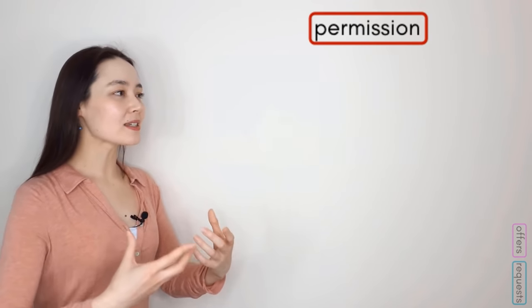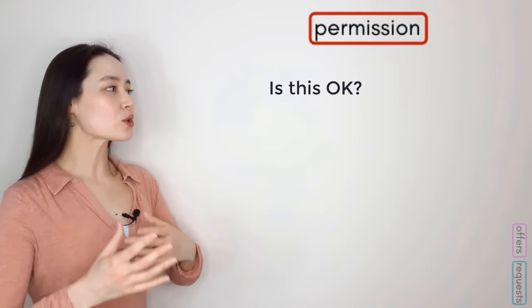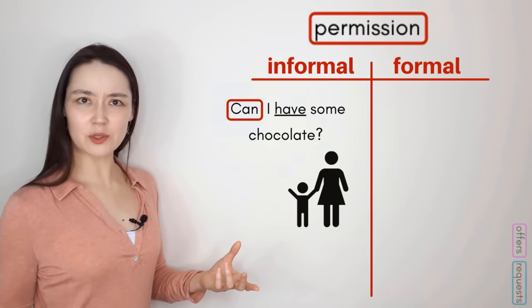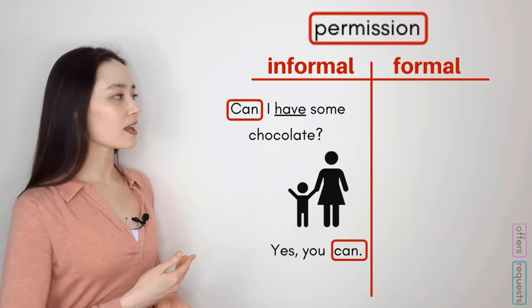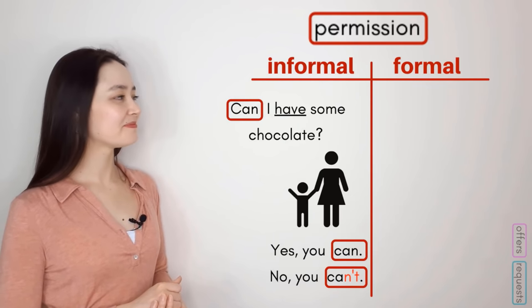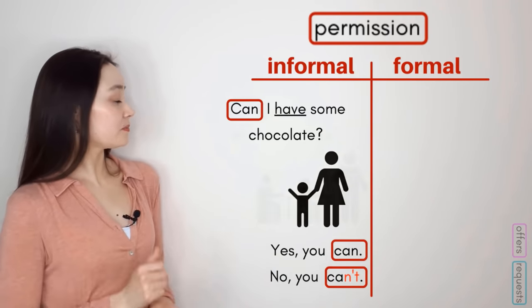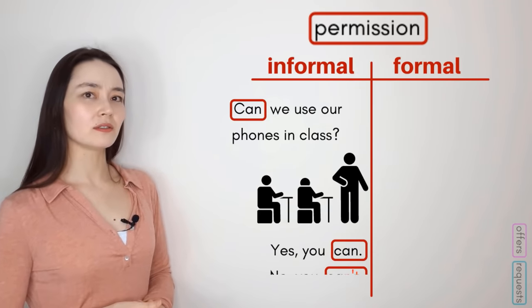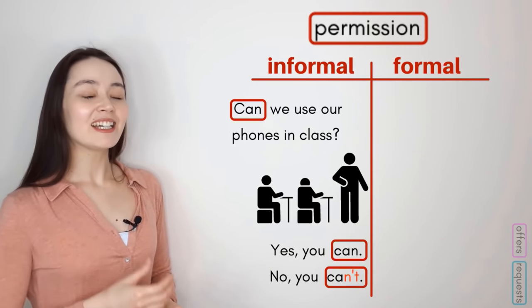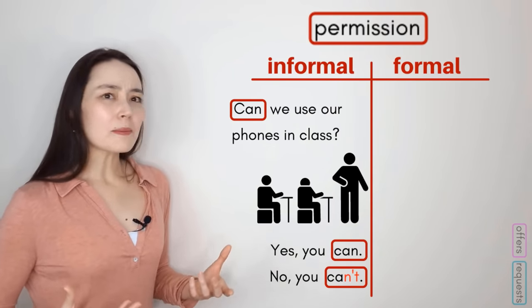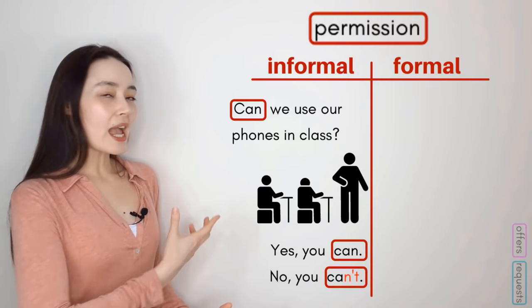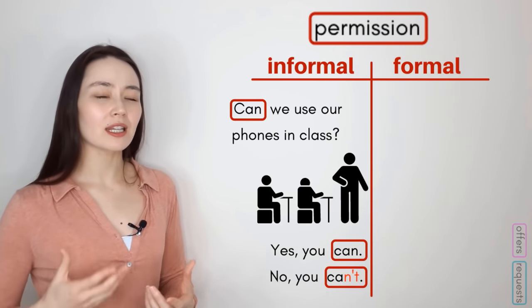Let's move on to permission. Permission means you're asking someone if something is okay in terms of rules and laws. Child to mom: 'Can I have some chocolate?' 'Yes, you can.' 'No, you can't.' Like possibility, 'can' is stronger and more informal — it's not rude or impolite, it's just very casual.